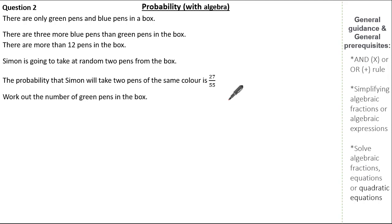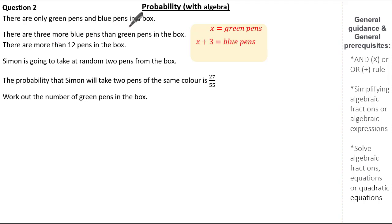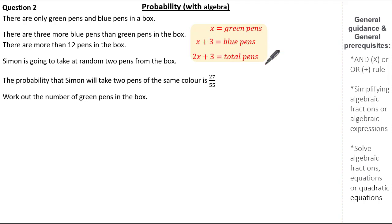Reading this question, hopefully you've identified the unknown to be the number of green pens — here I've used X, but you can use any letter. Given X is green pens and there are 3 more blue pens than green pens, X plus 3 represents blue pens. The total number of pens is 2X plus 3. Reading the question we also recognise Simon takes at random two pens from the box, so the events are dependent.